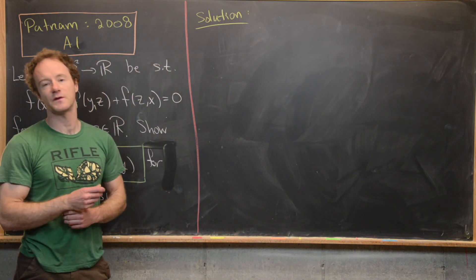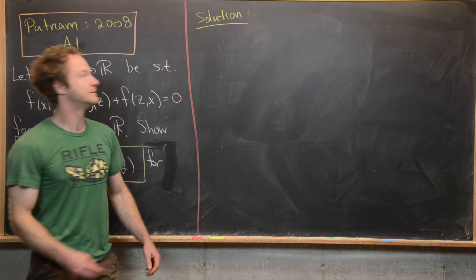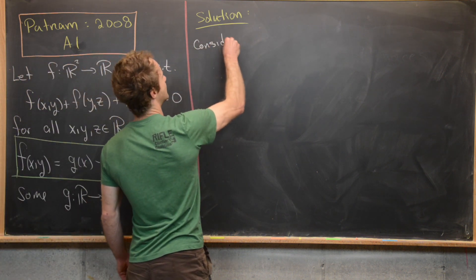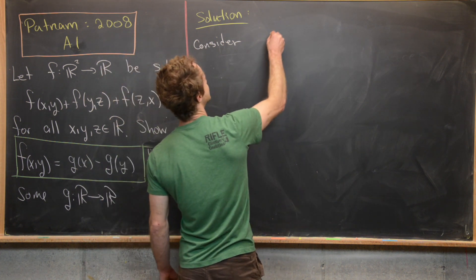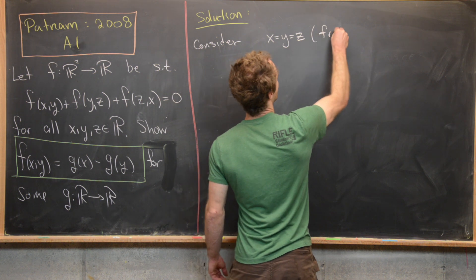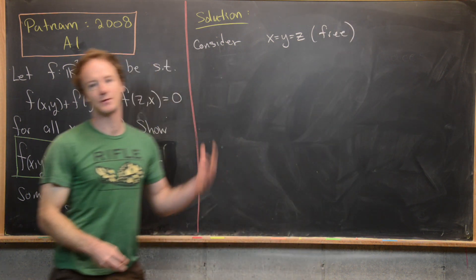Okay, so hopefully that hint was helpful. Now we're ready to look at a full solution. So the first thing that I want to do is consider the case when all of these inputs are the same. So in other words, consider x equals y equals z, but they're all free to be anything, but they have to be the same thing.